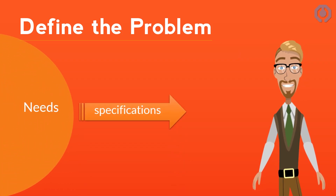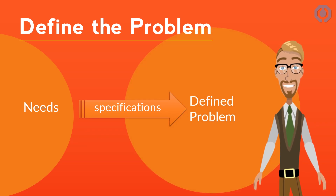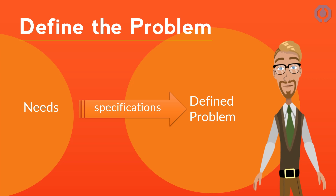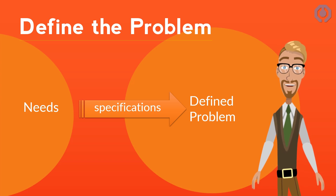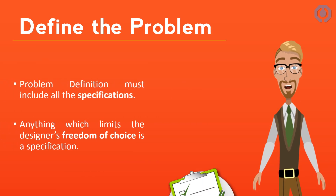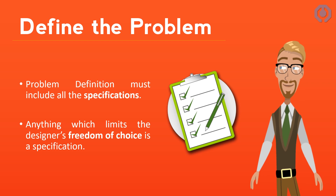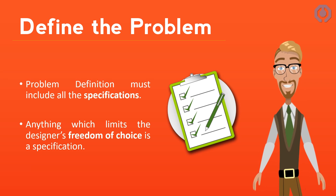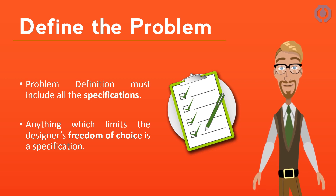Defining the problem is one of the most critical steps of the design process. There is an iteration between the definition of the problem and the recognition of need steps. Usually the true problem is not what it first seems. The problem definition is more specific than recognizing the need. For example, if the need is for cleaner air, the problem might be that of lowering the discharged dust from a power plant, or reducing the pollution from automotive exhausts. The problem definition must include all the specifications for the thing that is to be designed. Anything which limits the designer's freedom of choice is a specification.